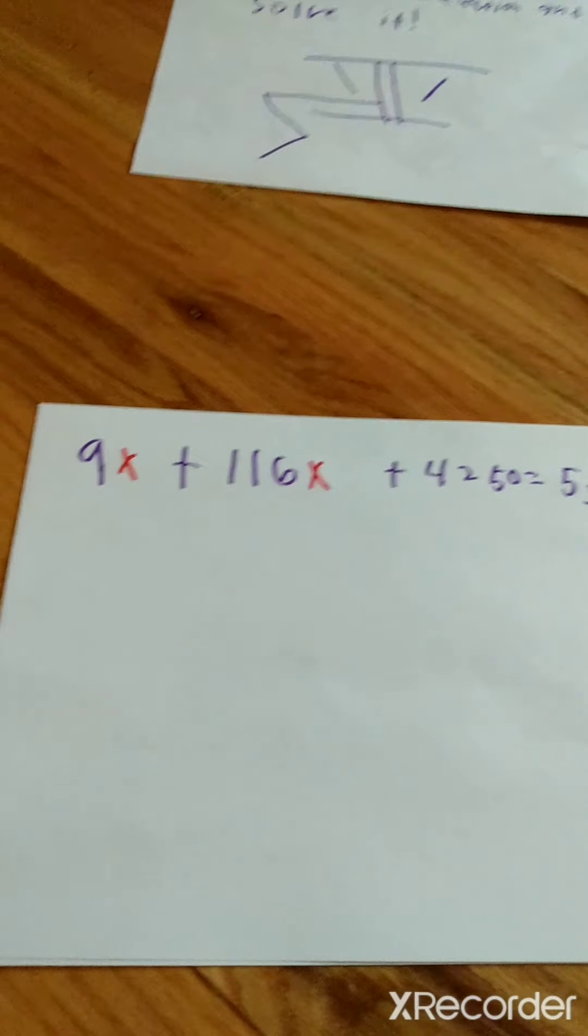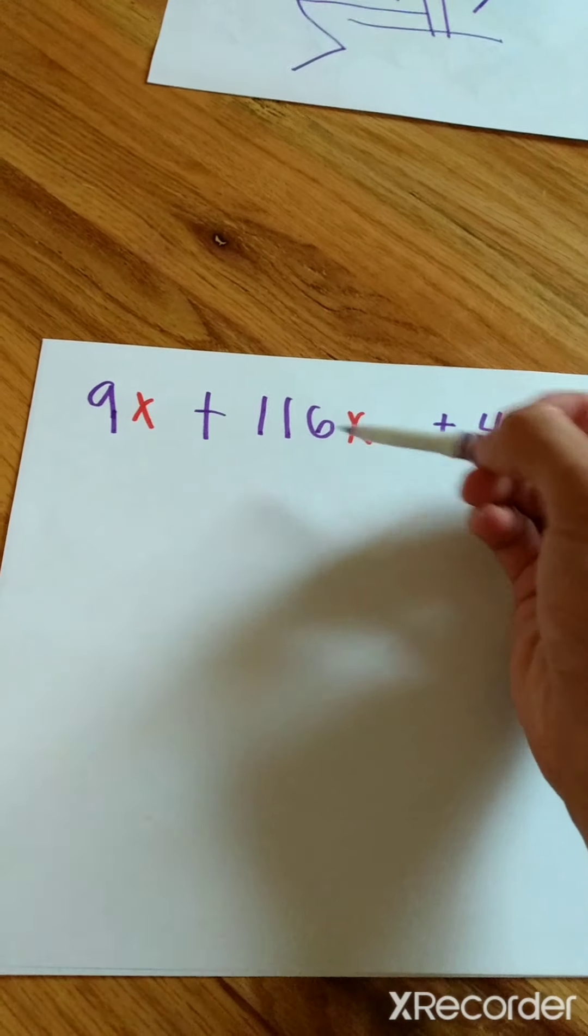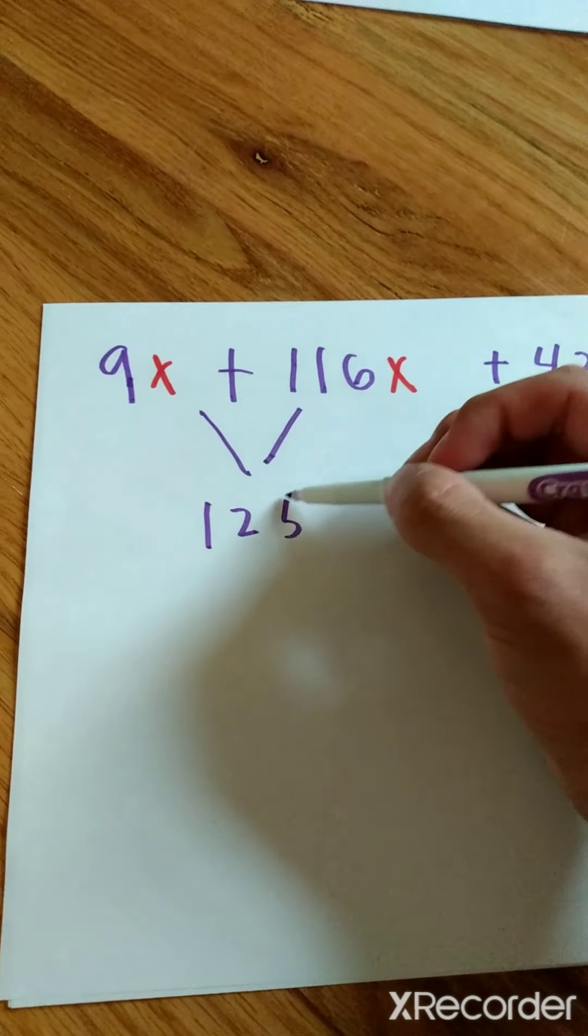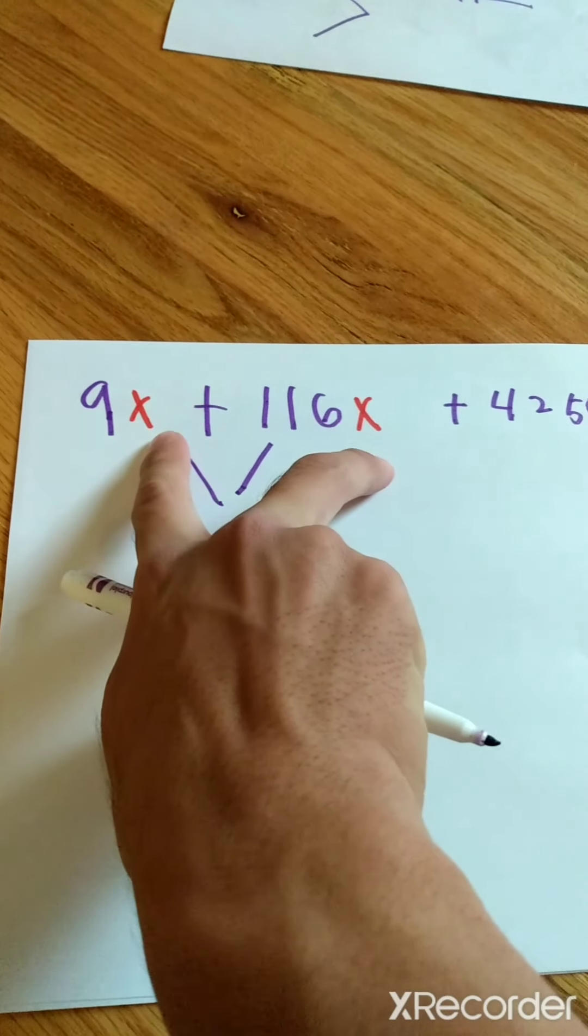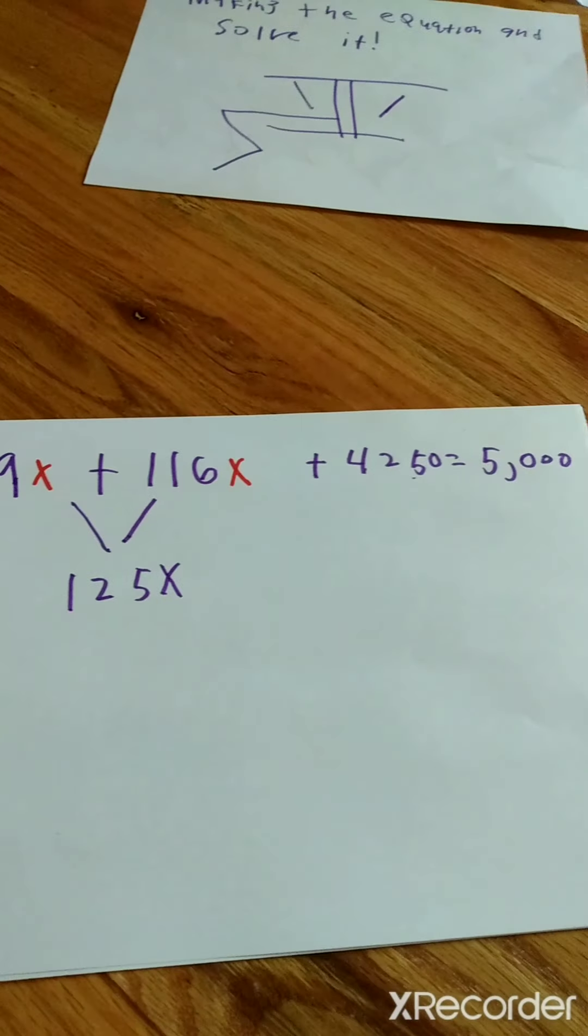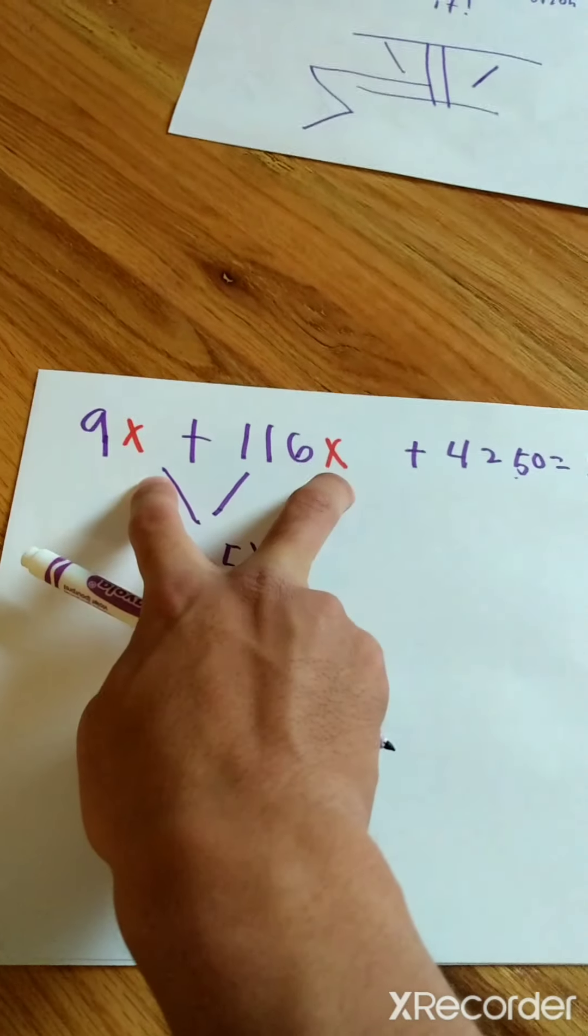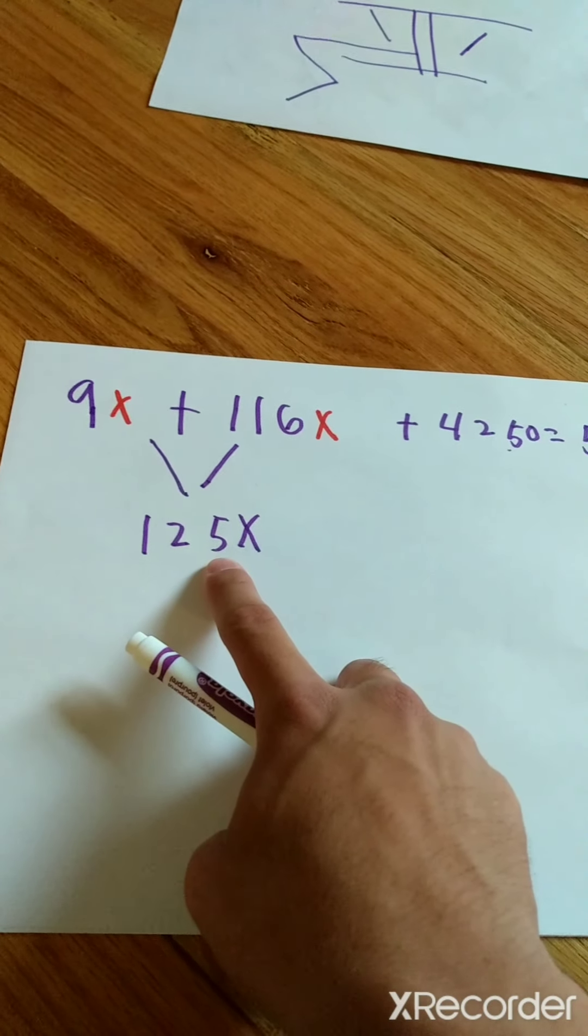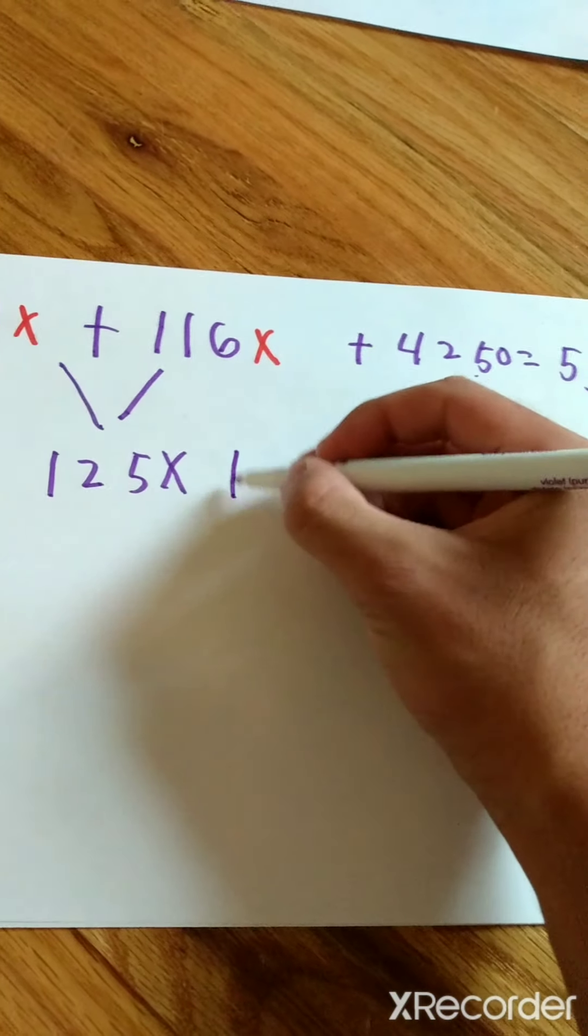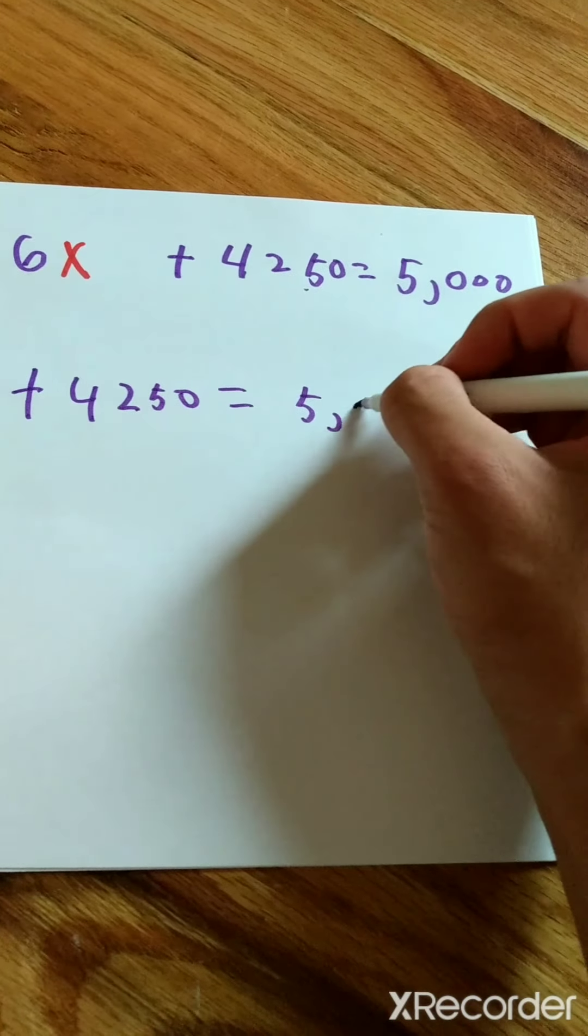So what we can do is we can combine like terms as our first step. We have 9X and 116X. What we can do to them is add them to get 125X. That's because they're both X's. We can't combine like terms with this number or that number, because that would tell us that we're adding apples and oranges, which we can't. But with the variables adding apples and apples, that can add us to get up to apples. So we have 125X plus 4,250 equals 5,000.